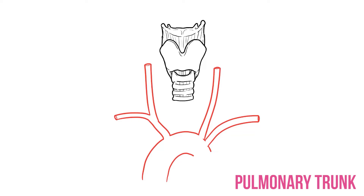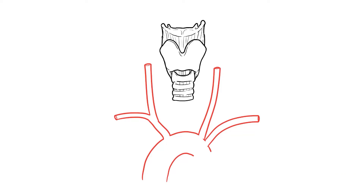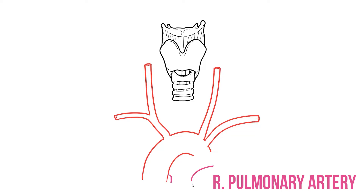Finally we need to add the pulmonary trunk that delivers deoxygenated blood to the lungs. Although this originates from the right ventricle, it actually sits to the left of the aorta. After leaving the heart it bifurcates, with the right pulmonary artery heading underneath the arch and a left pulmonary artery passing in front of the descending aorta.